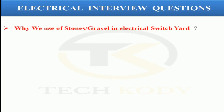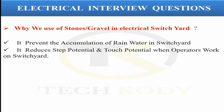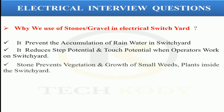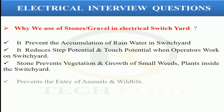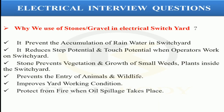The next question is: why do we use stones or gravel in an electrical switchyard? The gravel prevents the accumulation of rainwater in the switchyard. It reduces the step potential and touch potential when operating in the switchyard. It prevents the growth of small weeds and plants inside the switchyard, and prevents the entry of wild animals. It improves the yard working condition, protects from fire when oil spillage occurs, and the gravel increases the resistance between the operator and the ground.